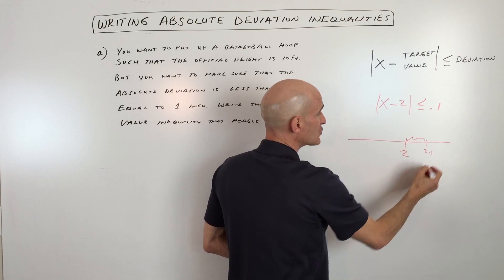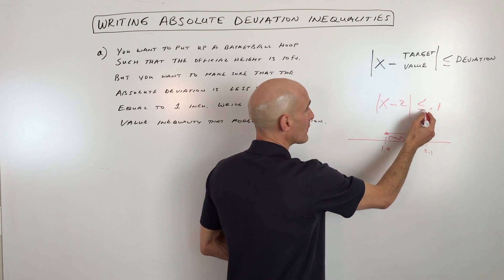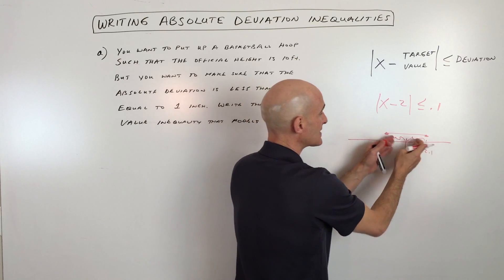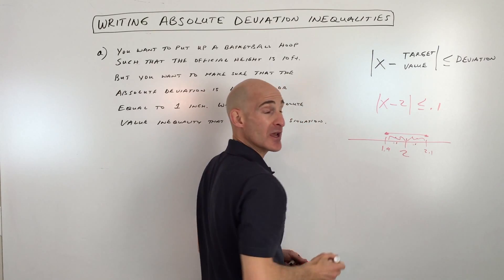So it could be over here at 2.1, or it could be over here at 1.9, but you want to be in between or less than or equal to—basically meaning less than or closer to—that distance is smaller than 0.1 units.